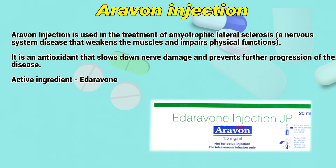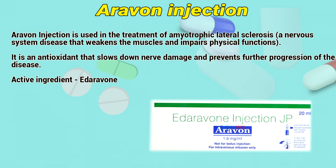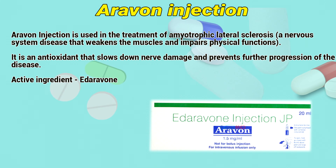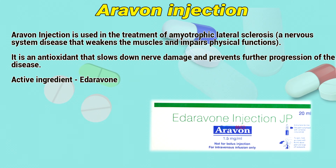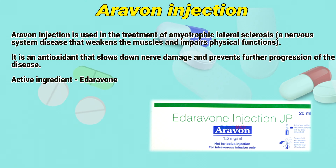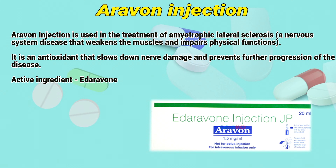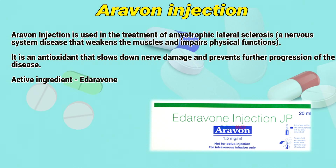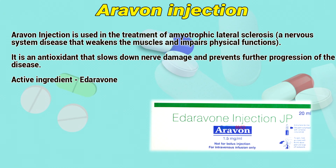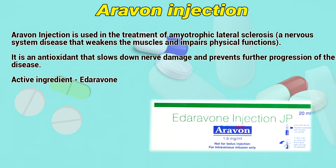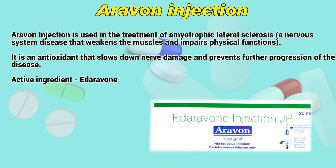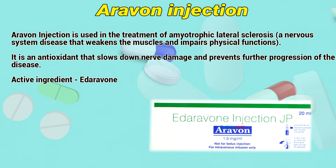Arovan injection is used in the treatment of amyotrophic lateral sclerosis, a nervous system disease that weakens the muscles and impairs physical functions. It is an antioxidant that slows down nerve damage and prevents future progression of the disease.